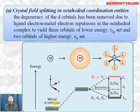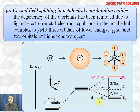In the octahedral complex, the five d orbitals are: dxy, dyz, and dzx (between the axes) and dx²−y² and dz² (on the axes). In octahedral complexes, all ligands approach along the axes, so dx²−y² and dz² are repelled more and form the eg set of higher energy. The dxy, dyz, and dzx orbitals lie between the axes, are repelled less, and form the lower energy t₂g set.